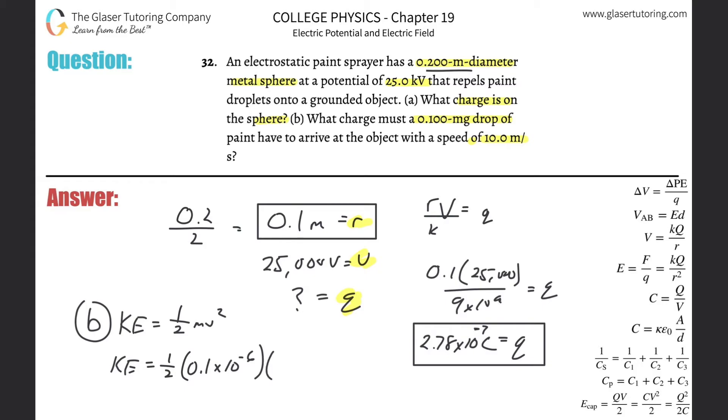And then the velocity here was 10 meters per second. Square that. And here we go. So this is going to be 0.5 times 0.1 times 10 to the minus six times then 10 squared. And this is five times 10 to the minus sixth. Okay. That's in terms of joules.